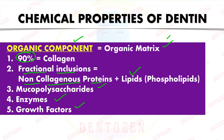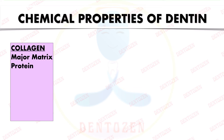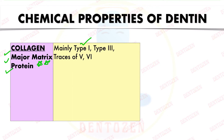The organic matrix also includes non-collagenous proteins, lipids, mucopolysaccharides, enzymes, and growth factors. Collagen is the major matrix protein of dentine — in contrast to enamel, which has enamel proteins. The main type is type 1 collagen, with some type 3 collagen and traces of other types.